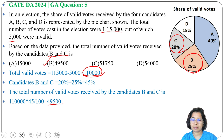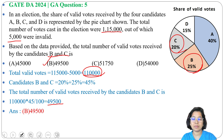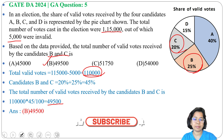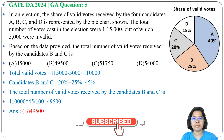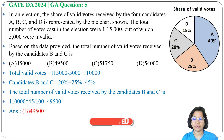The answer is option B: 49,500. So the total number of valid votes received by candidates B and C is 49,500. If this lecture is helpful for you, please like, share, and subscribe. Thank you.